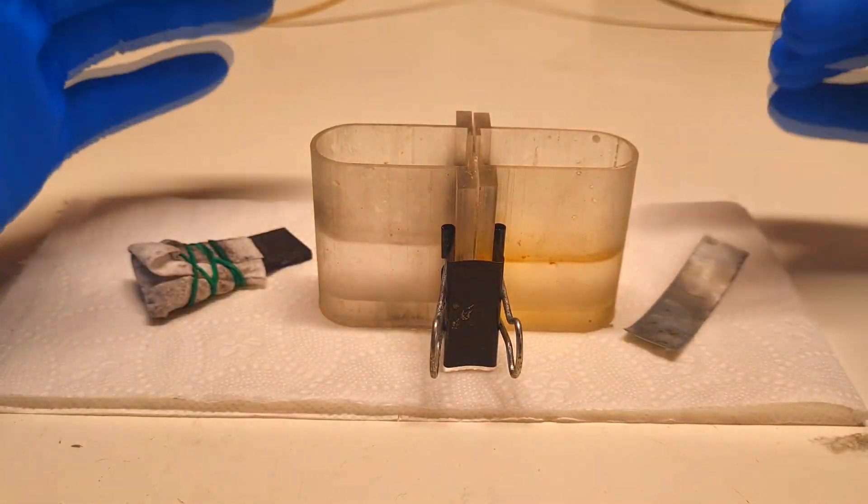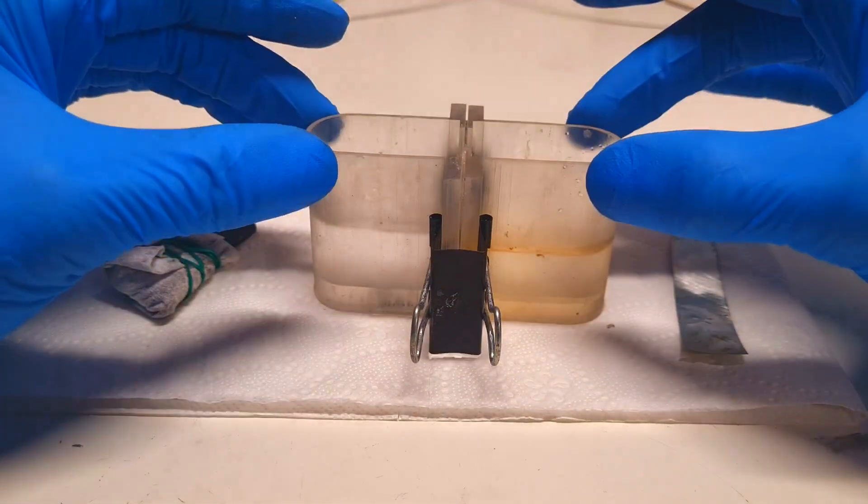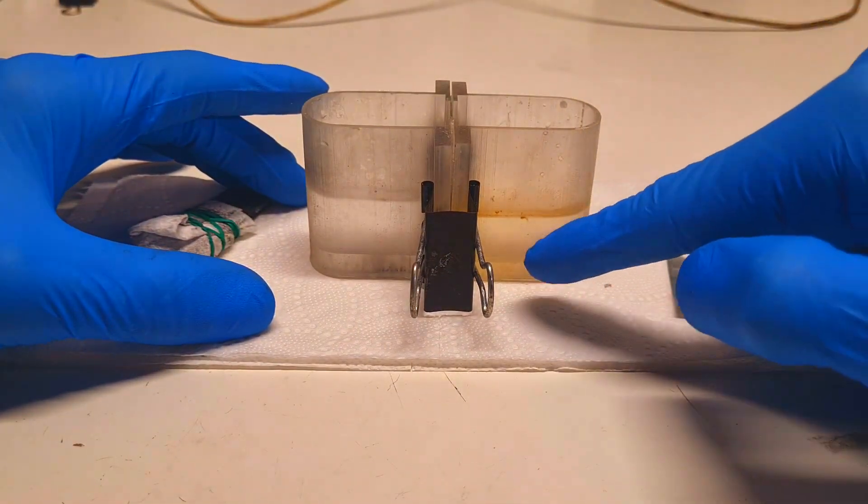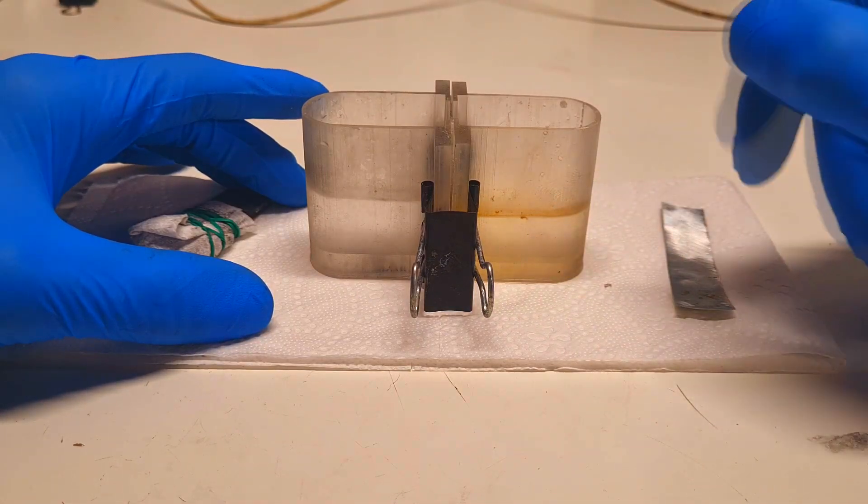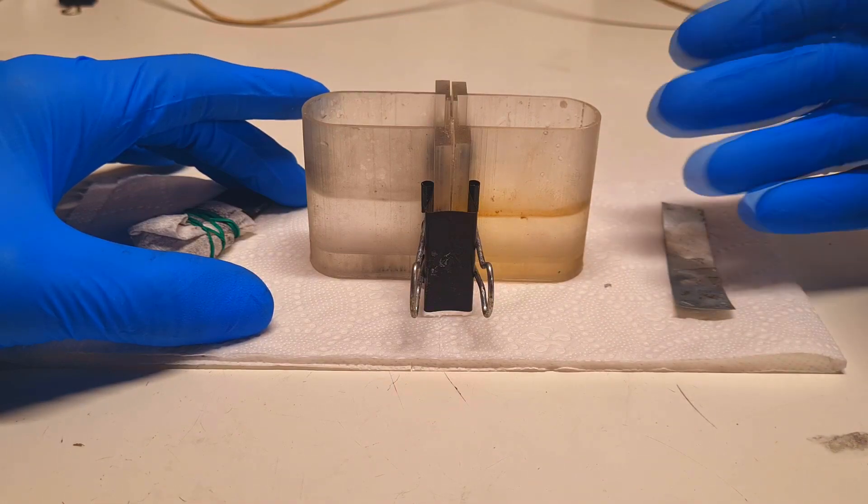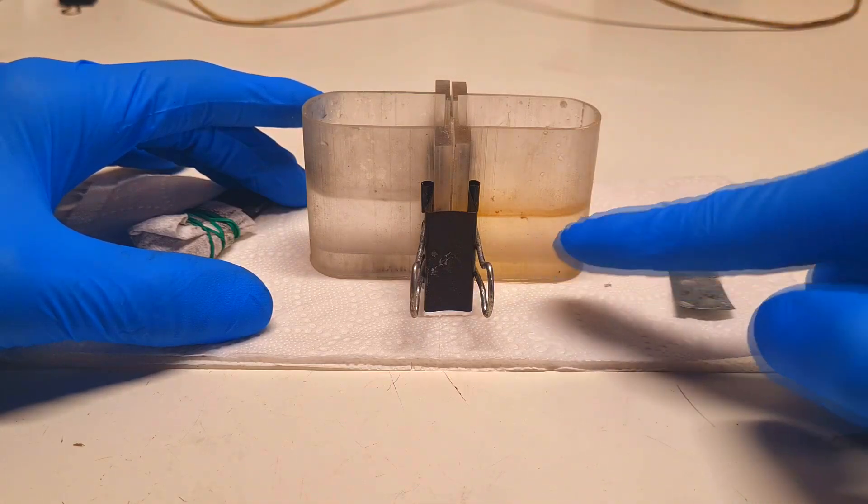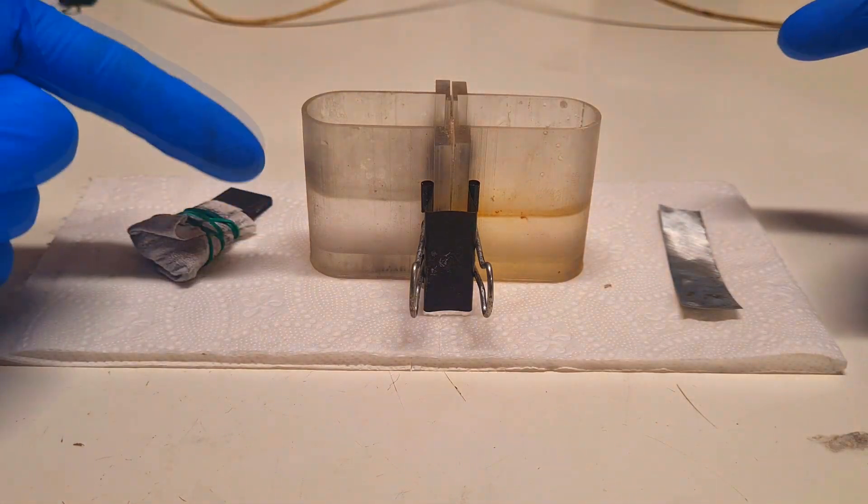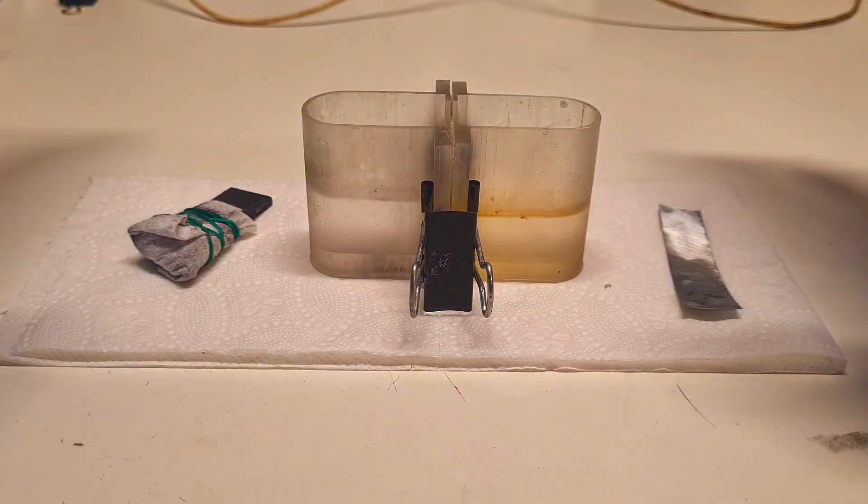So what happened in these nine days is in the beginning on the negative side, where the alkaline electrolyte is located, the electrolyte turned into brownish color. But after two days the electrolyte turned into this color like I have over here right now. But the positive side, where the acid electrolyte is located, I don't get any change.